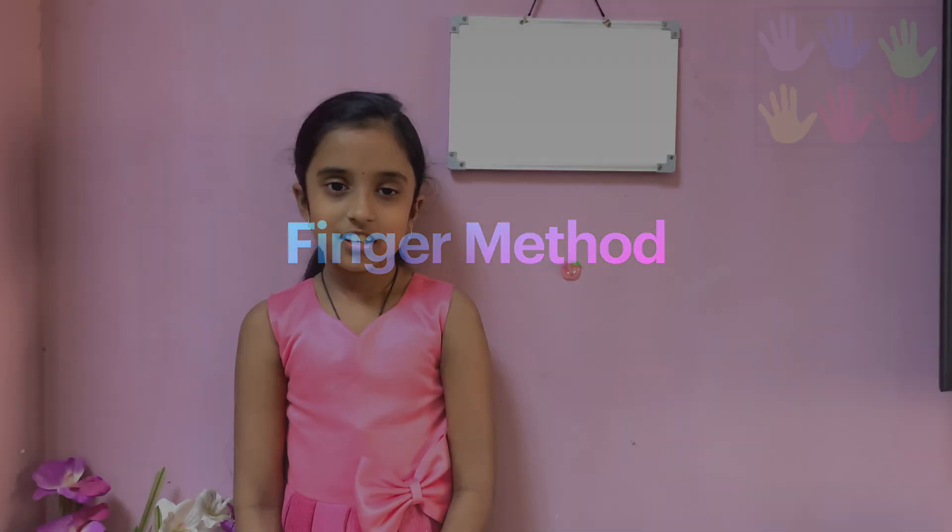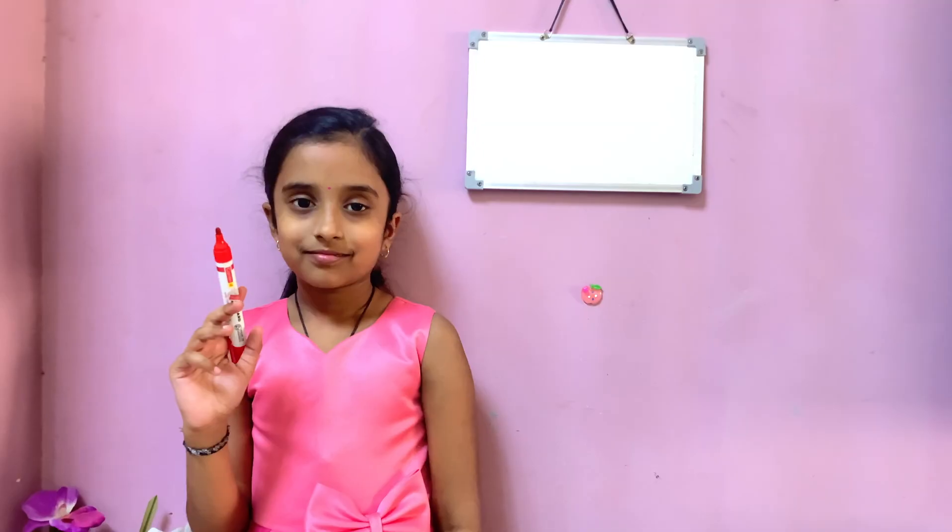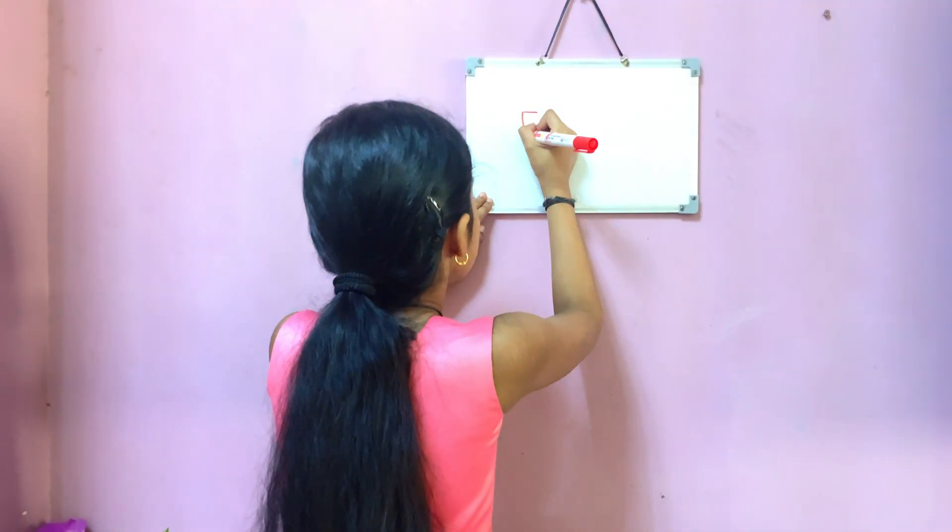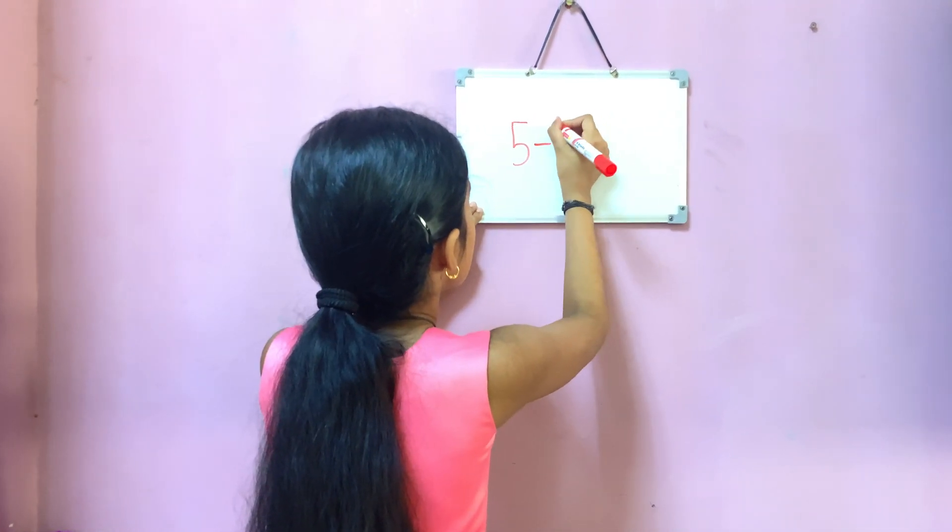Hi friends! We saw what is subtraction. Now let's learn how to do subtraction. There are two techniques for subtraction: one is the finger method and second is the mind method. First let's start with the easiest one, which is the finger method. Here I am writing five minus two.